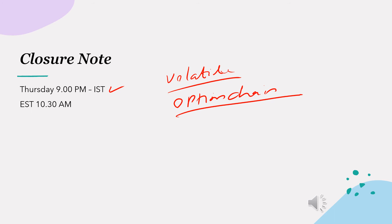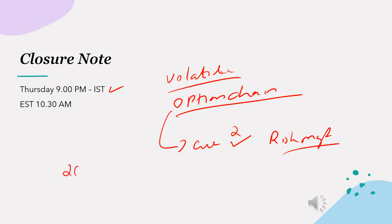If the cue derived from the option chain is aligned with the direction derived from the storage report analysis, then you can confidently trade. If not, you can use it as an additional measure of risk management. After the report comes, the next 20 to 30 minutes will be very volatile, so try to make your position after this volatility ends, as price tends to travel in the direction of the report cue.